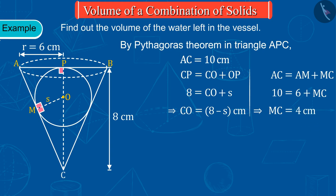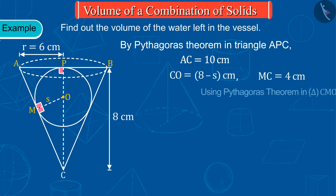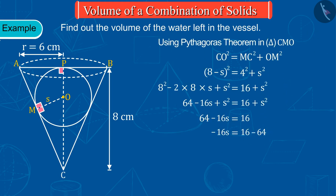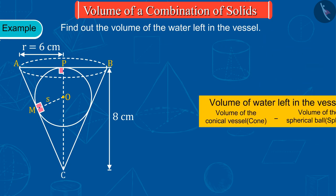In the same manner, from the figure, we get MC equals to 4 cm. Now, using Pythagoras theorem in right-angle triangle CMO, we get S equals to 3 cm, which is equal to the radius of the spherical ball.